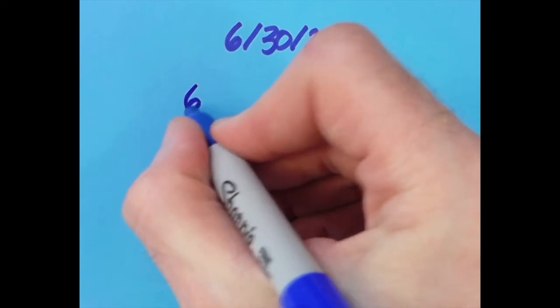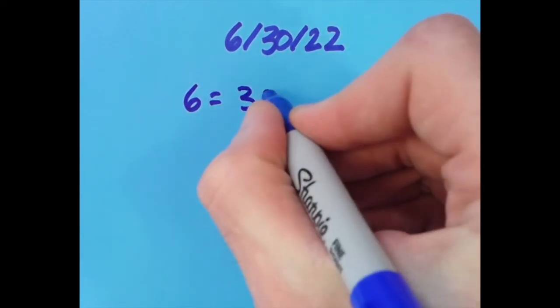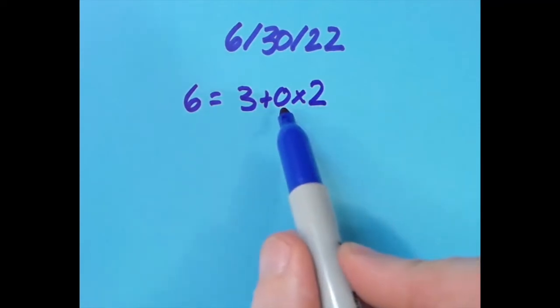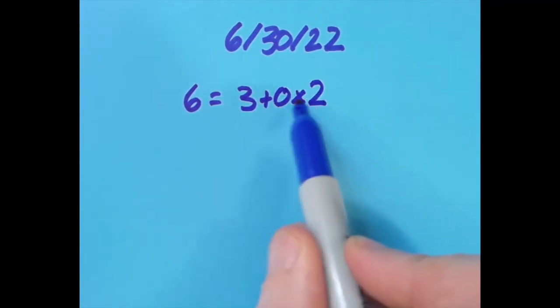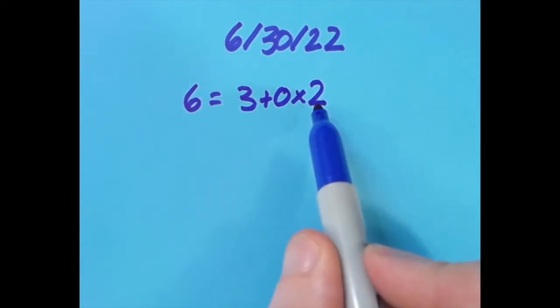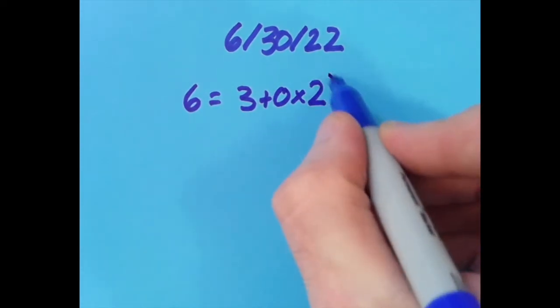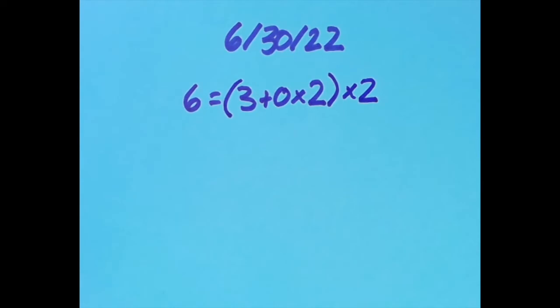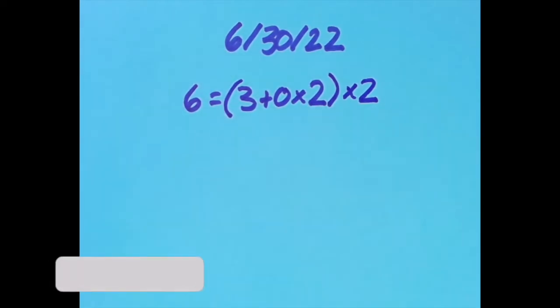What I came up with is that 6 = (3+0×2)×2. Now here we have to do the 0×2 first to give us 0, so we really have 3+0, that's 3, and if we take all of that and multiply it by 2, then we have 3×2 giving us 6.